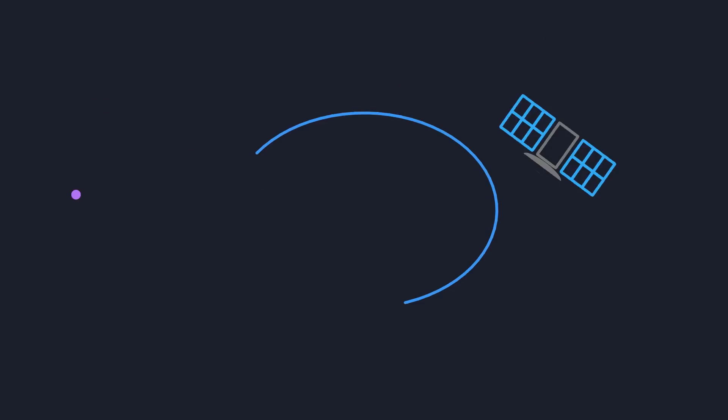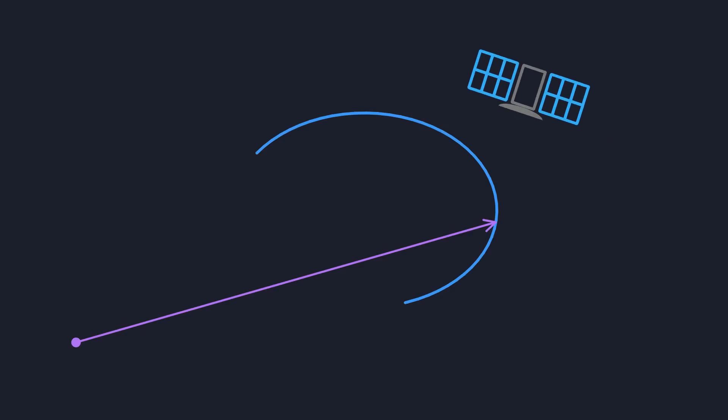Then you draw position vectors. Those are vectors from the origin to the position of the satellite. A short time later the satellite has moved further along its orbit. So the new position vector is over here.